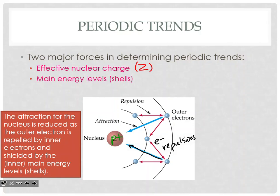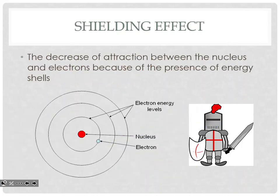So remember, on our diagram, this would be like N=1, this would be N=2, one more shell would be N=3. That's what we're talking about when referring to the main energy levels. The main energy levels also correspond to the rows on the periodic table.